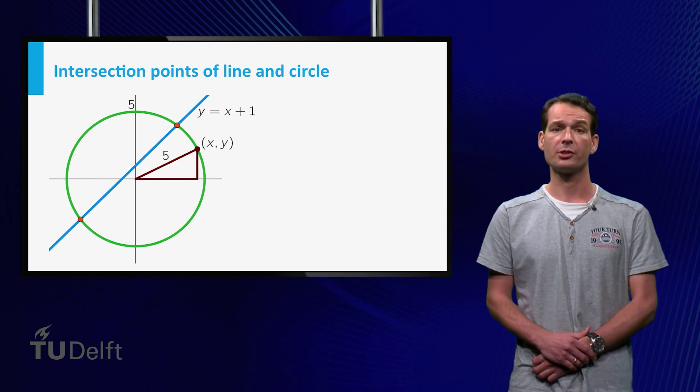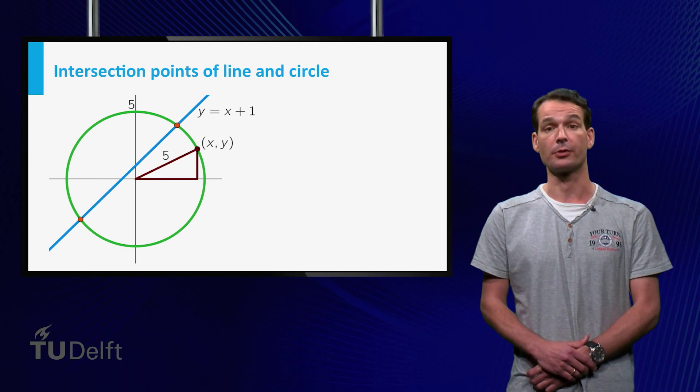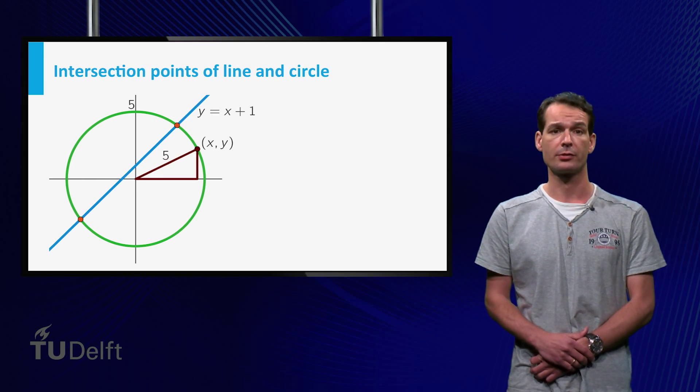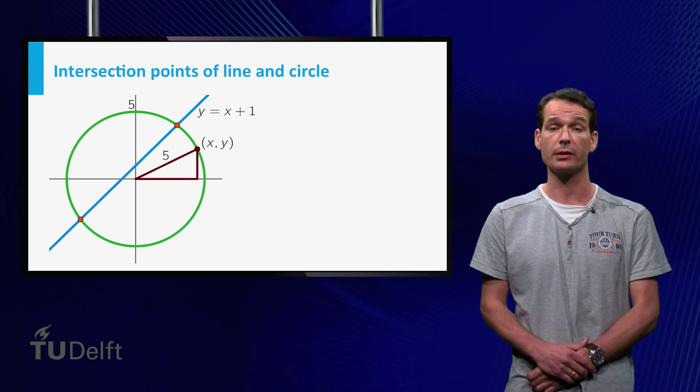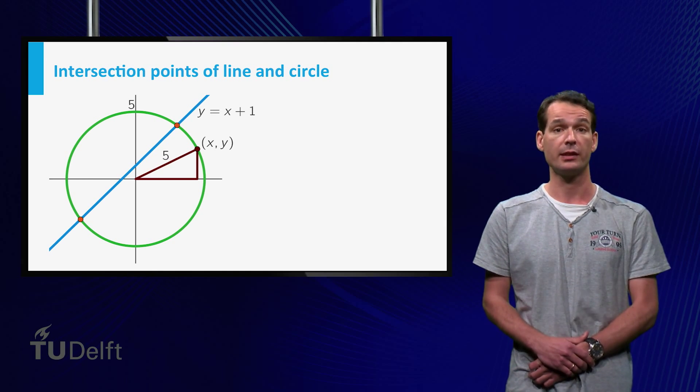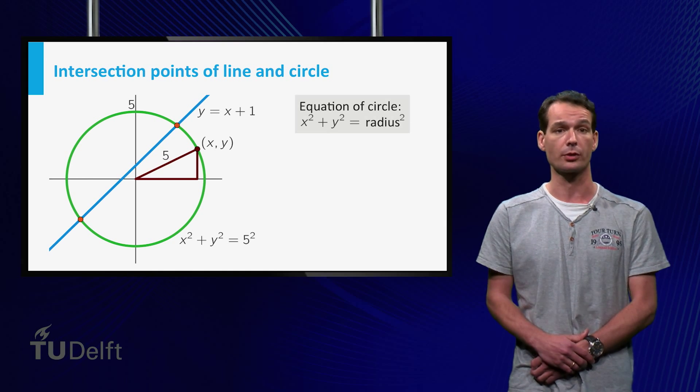The circle consists of all points x, y that have distance 5, the radius, to the origin. So by Pythagoras' theorem we have x squared plus y squared equals 5 squared, and this gives us an equation describing all points on the circle.